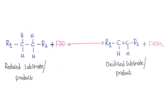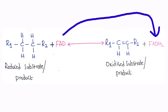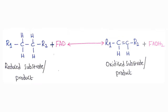Coming to the general reaction involving FAD: the reduced substrate transfers hydrogens to FAD, converting it into FADH₂, while the reduced substrate becomes the oxidized product. This is also a reversible reaction. In reverse, FADH₂ transfers hydrogens to the oxidized substrate to form the reduced substrate, and FADH₂ is converted back into FAD. So the reduced coenzyme FADH₂ is converted into the oxidized coenzyme FAD.